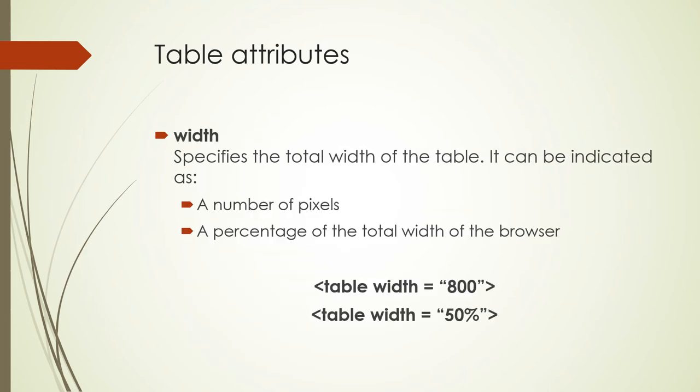The last table attribute you need to know about is width — the width of the entire table within the browser. It can be indicated in two ways: as a number of pixels, or as a percentage of the width of the browser. For example, table width equals 800 pixels, or 50 percent.